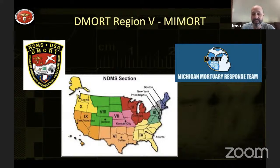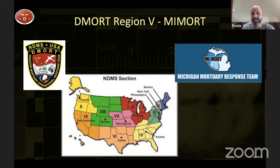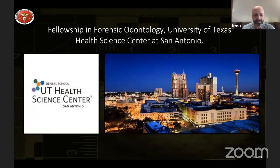If anything like a plane crash or hurricane happens with a big loss of life, they call in DMORT and we're sent in to do identifications. I'm also part of MIMORE, the Michigan state version of it. Local events are handled by the Michigan team; if it becomes larger than what the state can handle, DMORT is called as backup.